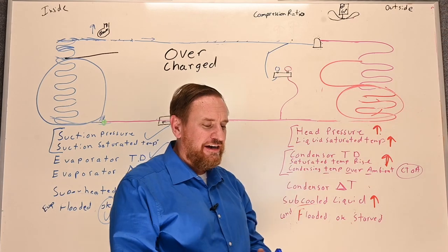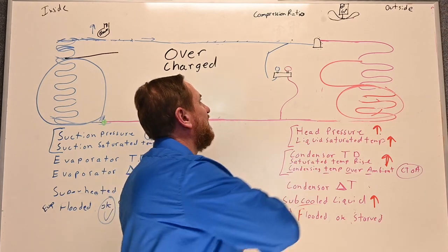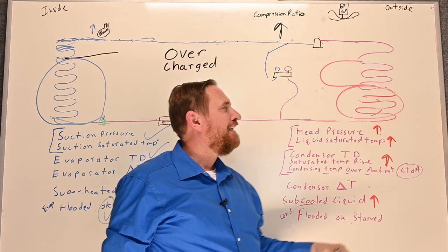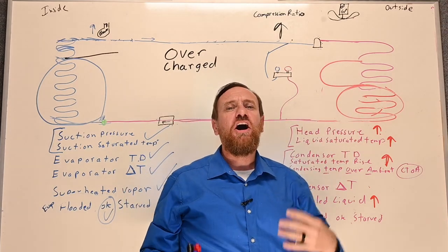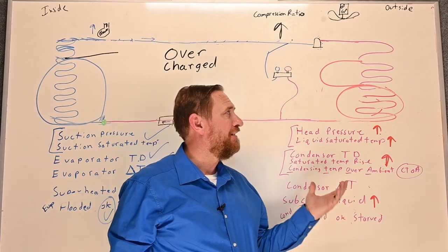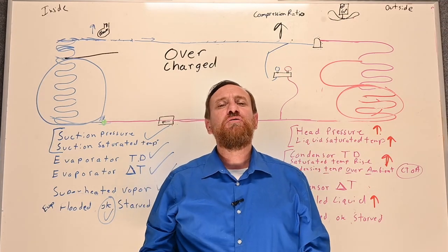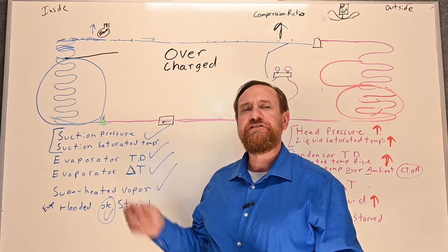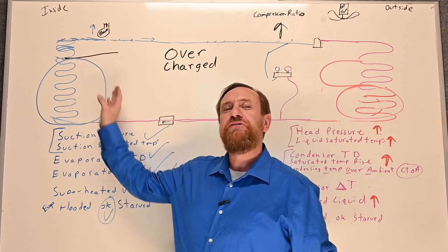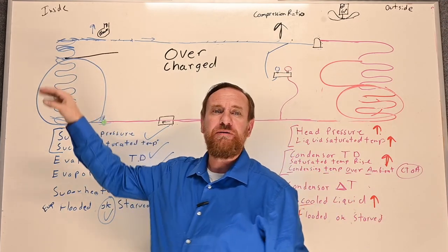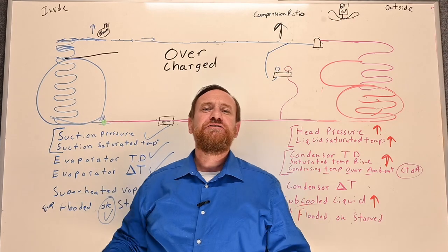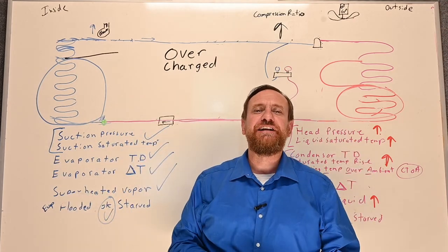Even if you overcharge a TXV system — which is still bad — the TXV or EXV will try to maintain that evaporator coil, which is fantastic. But all the problems are still happening out here on the condenser side. More pressure causes a higher compression ratio — we're stacking refrigerant to a higher temperature outside, more vibrations, more work for the compressor. That's why with TXVs, we look at sub-cooling first. If we see too much sub-cooled liquid, there's going to be an issue. But we also still want to check superheat to confirm it's doing its job. That's how an overcharged system affects a thermostatic expansion valve.